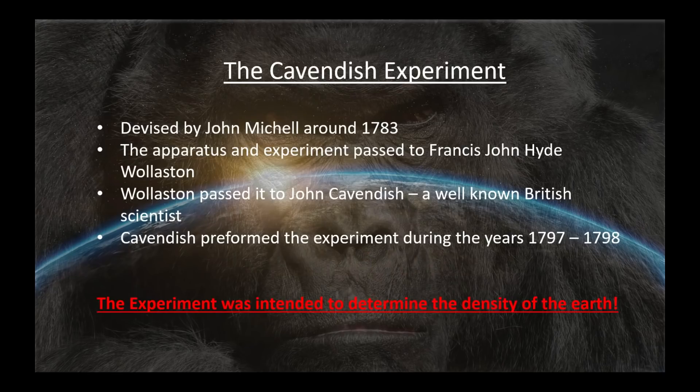The so-called Cavendish experiment was actually devised by a guy named John Mitchell, who passed it on shortly before his death to another gentleman who ended up giving it to Henry Cavendish, who performed the experiment over about a year period somewhere in 1797 to 1798. The important thing we're going to cover today is to get the point across that the experiment was intended to determine the density of the earth. That's what it was for, nothing else. I've heard people on both sides get it wrong, and it's time we understood exactly what we're talking about.